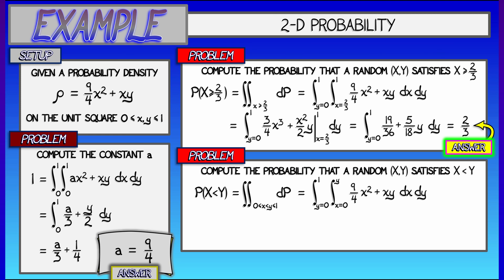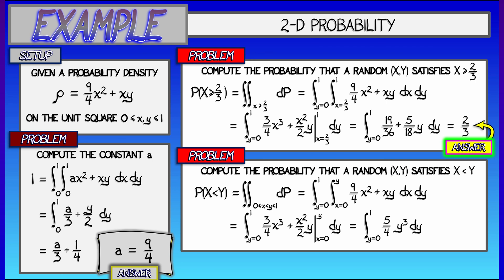What we're integrating is the density, 9 fourths X squared plus XY. Integrating first with respect to X gives 3 fourths X cubed plus X squared Y over 2, just like before. But now I evaluate that from 0 to Y. That gives, with simplification, 5 fourths Y cubed. Integrating that with respect to Y from 0 to 1 gives an answer of 5 sixteenths — which makes sense and is kind of cool.